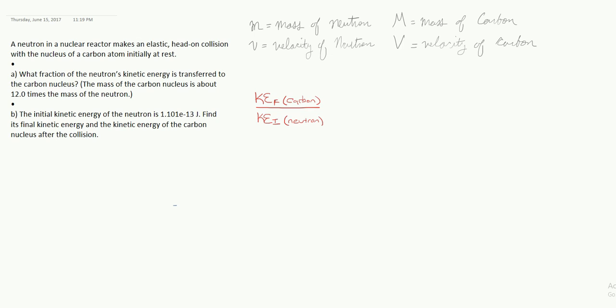It's the ratio of final kinetic energy of the carbon atom and the initial kinetic energy of the neutron. If this is a whole, then this part of it over the whole gives us the fraction of the total that we are looking for.